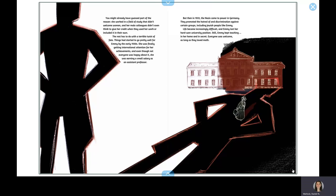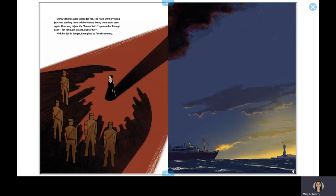Still, Emmy kept teaching, in her home and in secret. Everyone was welcome, as long as they loved math. Emmy's friends were scared for her. The Nazis were arresting Jews and sending them to labor camps. Many were never seen again. How long before the brown shirts appeared at Emmy's door, not for math lessons, but for her. With her life in danger, Emmy had to flee the country.